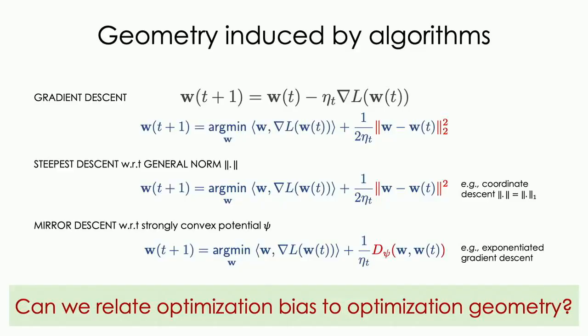In particular, we can think of steepest descent with respect to general norms, leading to a family of algorithms. A special case is coordinate descent, which we get when the norm is the L1 norm. Another family arises when instead of penalizing updates in some norm, we penalize them in a Bregman divergence — the Bregman divergence between the next update and the current update. That leads to the mirror descent family of algorithms.